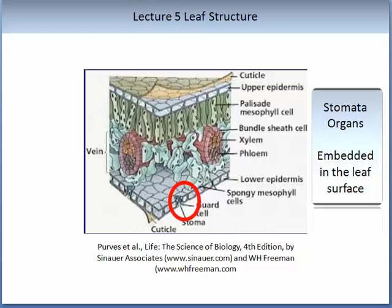The top part of the leaf has the cuticle, followed by the upper epidermis. Under the upper epidermis are the palisade mesophyll cells — this is where the photosynthetic or energy production part of the leaf occurs. Underneath are the bundle sheath cells surrounding the xylem and phloem. At the bottom is the lower epidermis with a waxy cuticle to protect against water loss. It is within the lower epidermis that you find the stomata organs.